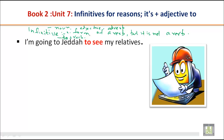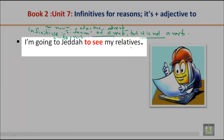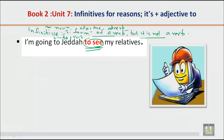So remember: it is a form of a verb but not a verb; it can function as a noun, adjective, or adverb; and it is always 'to' plus verb. For example, look at the sentence: 'I'm going to Jeddah to see my relatives.' Here, 'to see' is the infinitive.